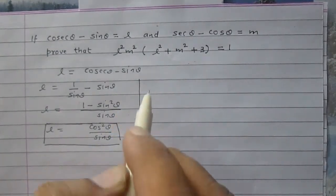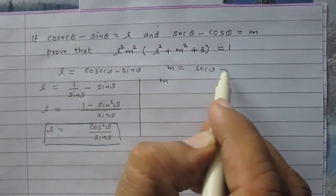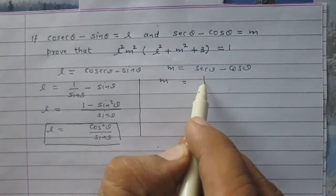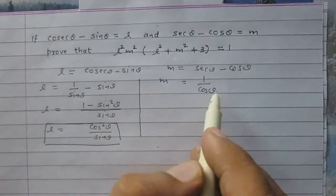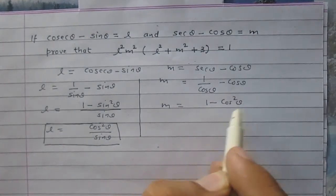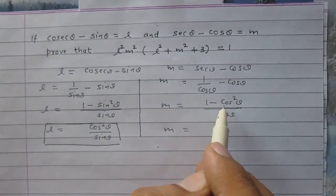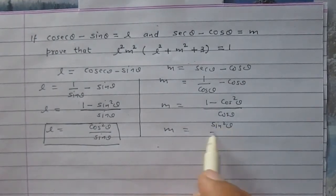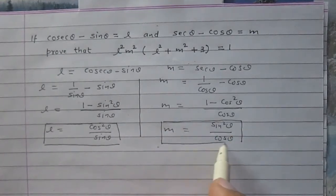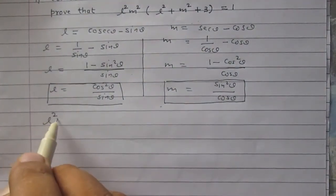Now consider the second expression: m = sec theta minus cos theta. Since sec theta is the reciprocal of cos theta, we write it as 1 upon cos theta minus cos theta. On simplification, m = (1 minus cos squared theta) upon cos theta. Since 1 minus cos squared theta equals sine squared theta, the value of m is sine squared theta upon cos theta.